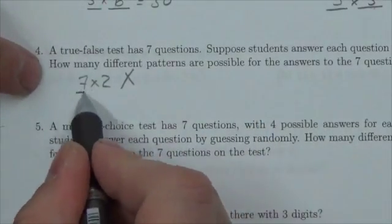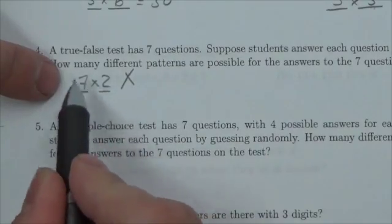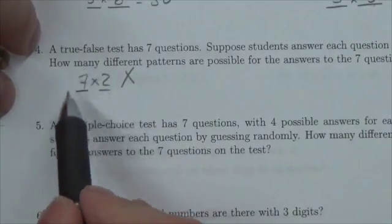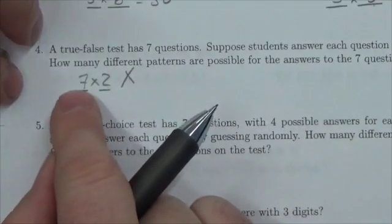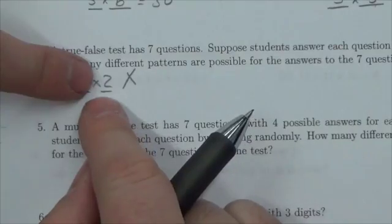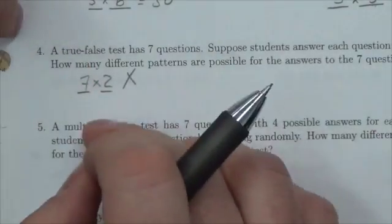The reason why that's incorrect is because you have to understand what these numbers represent. This represents one choice out of seven options, so you're obviously grabbing that number because you're referring to the number of questions. But what this would mean is you're only choosing to answer one of those questions, that's it, and then there were two options for that question, and so you're getting 14.